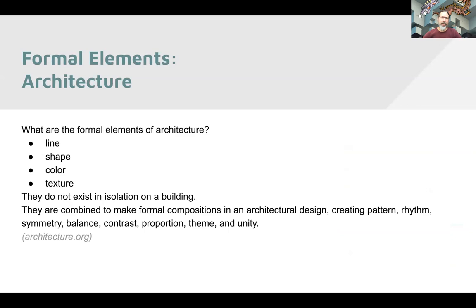Formal elements of architecture are again pretty well defined — architects and architectural scholars and historians have thought a lot about that. They think those are line, shape, color, and texture — that buildings are largely made up of those things. They don't exist in isolation; a building is a combination of lines forming shapes that have color and texture, organized in different ways to make formal compositions. They're used to create pattern, rhythm, symmetry, balance, contrast, proportion, theme, and unity — similar to art, but focused on architectural structure.